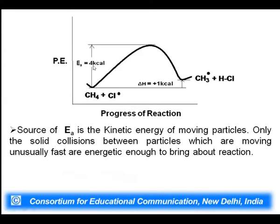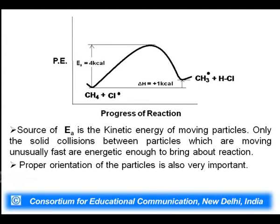The source of activation energy is the kinetic energy of the molecules. Proper orientation is also very important: methane must orient so that the hydrogen atom collides with the chlorine radical, enabling the chlorine radical to abstract the hydrogen from methane to form the methyl radical and HCl. Step 2 thus requires both sufficient activation energy to cross the energy barrier and proper molecular orientation.